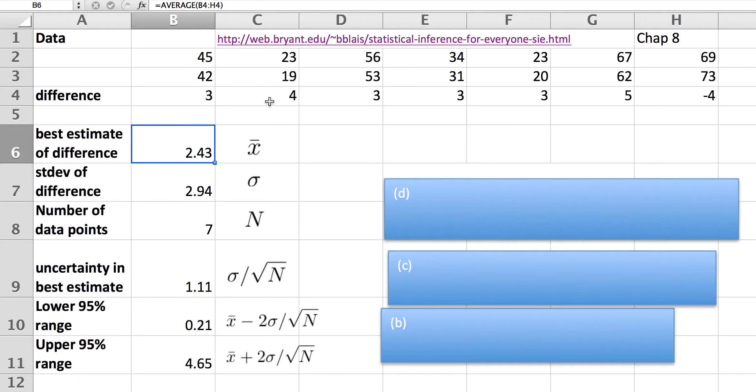To quantify the uncertainty, we have to calculate out something called the standard deviation. The standard deviation in the Excel spreadsheet equation is STDEV. It's a measure of the spread of the data.